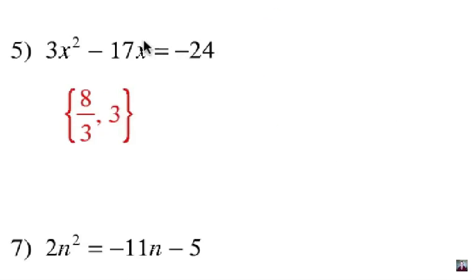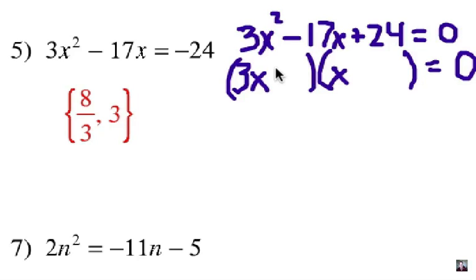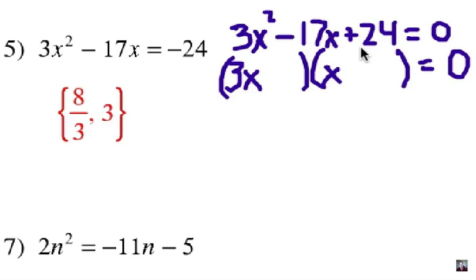Moving on to number 5. If I add 24 to each side, now I have 3x squared minus 17x plus 24 equals 0. Now when I factor it, I know that I have to have a 3x in one group and an x in the other group, and then I need to try to find factors for 24. The idea is get everything over on the left equal to 0, and then we factor it.